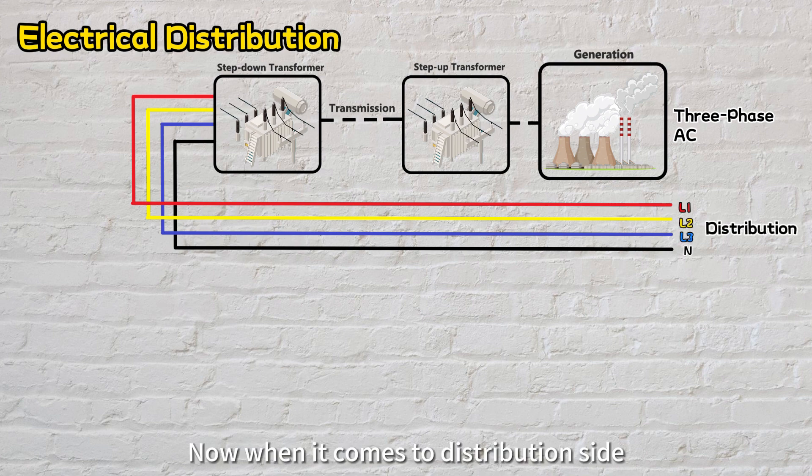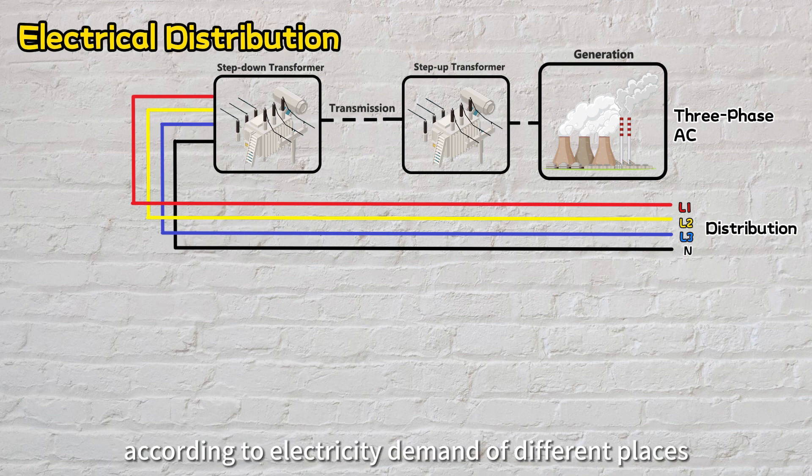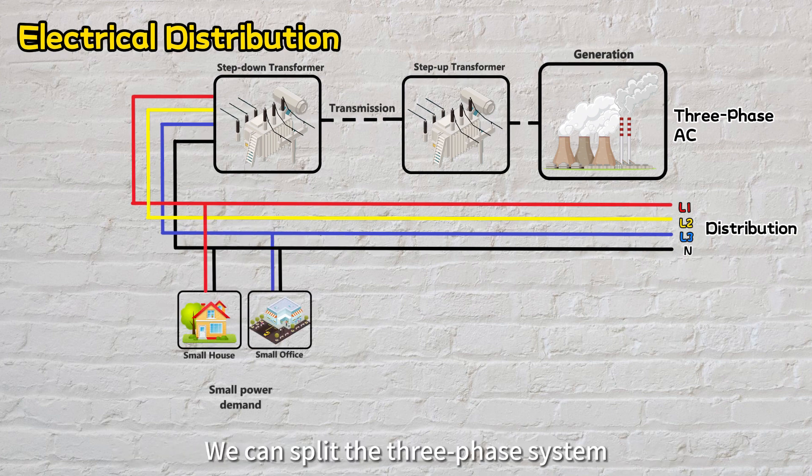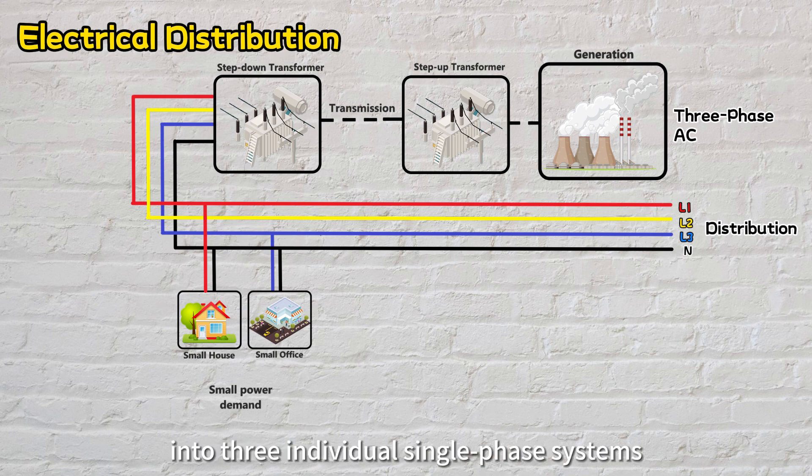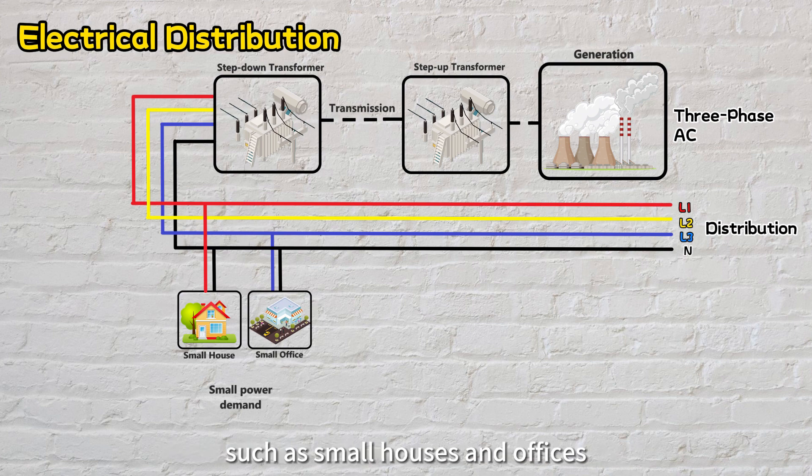Now, when it comes to the distribution side, the three-phase system is systematically distributed according to electricity demand of different places. We can split the three-phase system into three individual single-phase systems, mainly to supply those places with lower electricity demand such as small houses and offices.